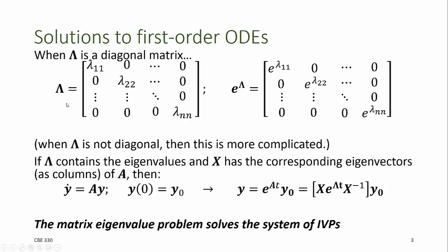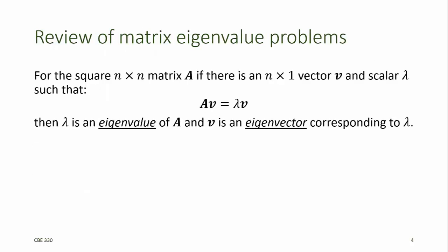If this diagonal matrix, capital lambda, contains the eigenvalues, and another matrix X has the corresponding eigenvectors arranged as columns, then the solution to the linear set of ODEs is related to the eigenvectors and their corresponding eigenvalues. Therefore, finding the solution to the matrix eigenvalue problem solves the system of ODEs formulated as an initial value problem. Recall that for a square n by n matrix A, if there is an n by 1 vector v and a scalar lambda that satisfies this equation, then we say that lambda is an eigenvalue of matrix A, and v is a corresponding eigenvector.